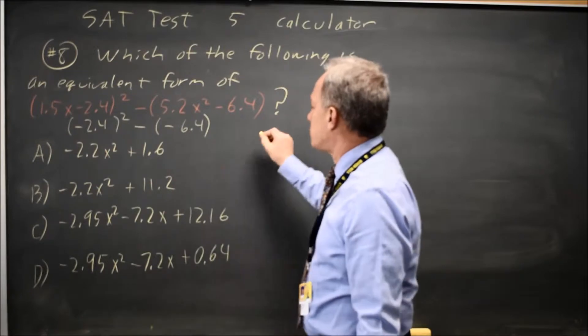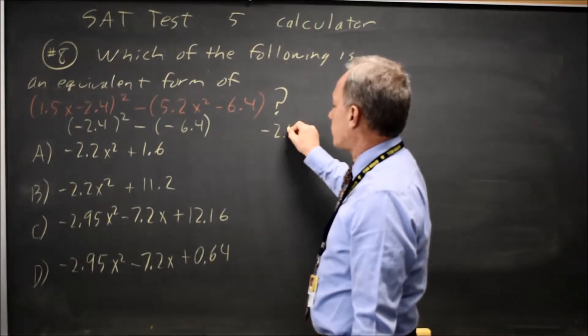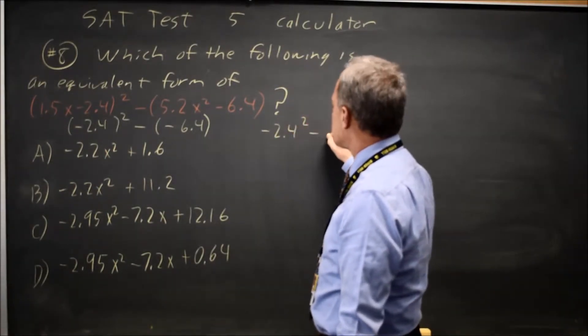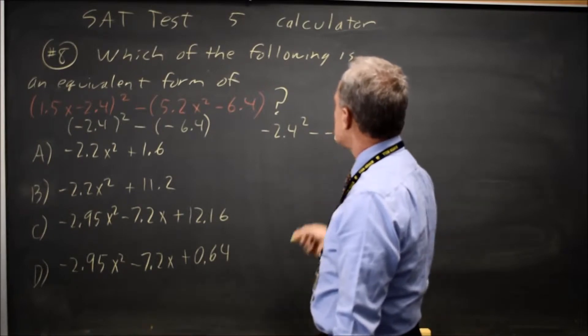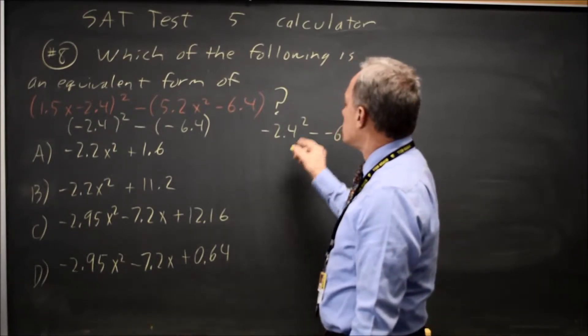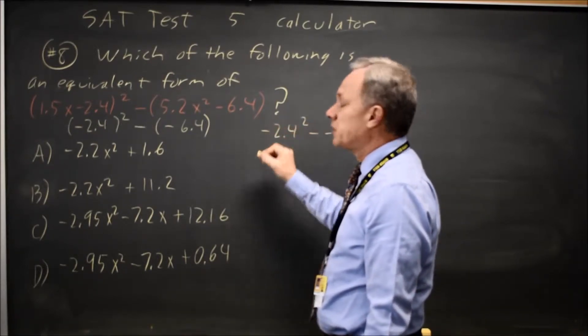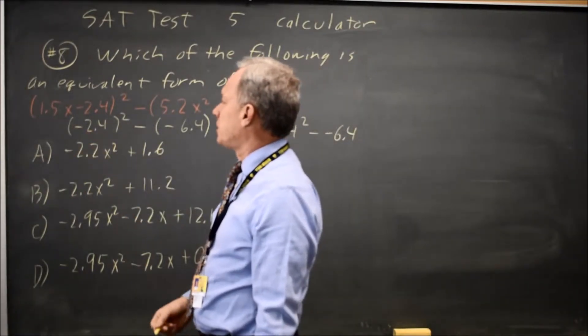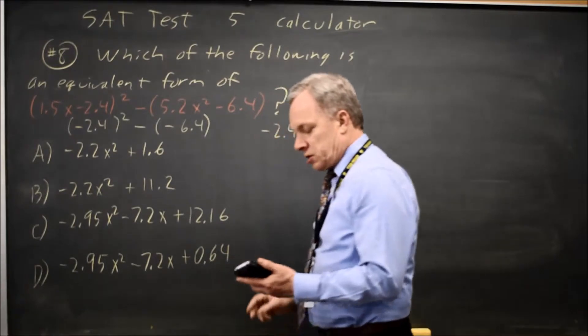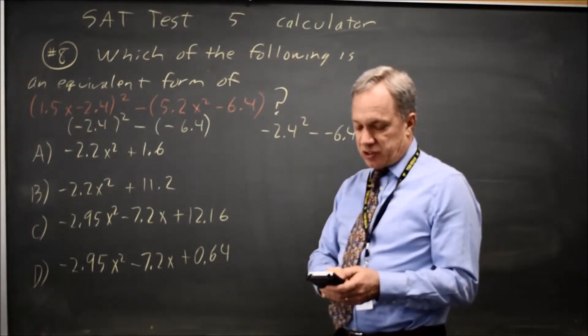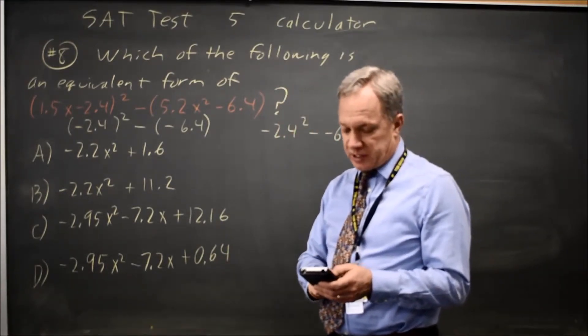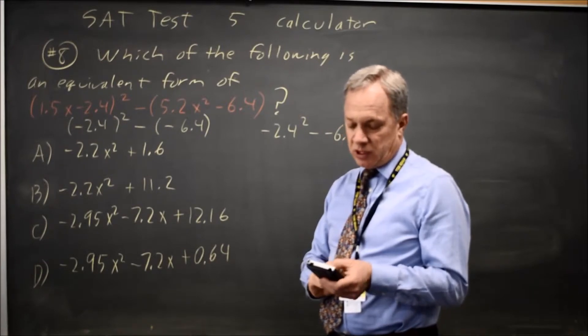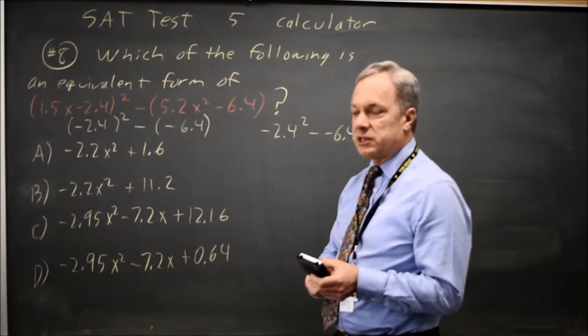Without the parentheses, if I just type negative 2.4 squared minus negative 6.4, the calculator would square the 2.4 and then take the negative of that answer when I'm supposed to square the negative number, negative 2.4. So typing parentheses negative 2.4, square that minus negative 6.4, I get 12.16.